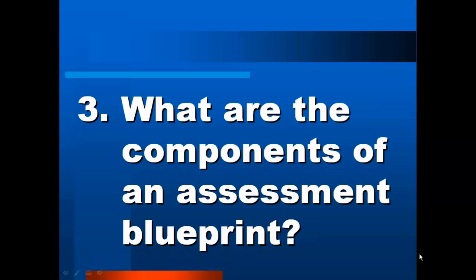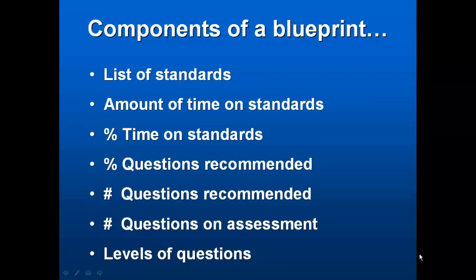What are the components of a typical assessment blueprint? Although there are many different kinds and formats, a typical blueprint includes six components. First, a list of standards or units or topics that comprise the course. Next, the amount of time spent in a course teaching each of the standards — for example, the number of hours or weeks. The next component is the percentage of time spent teaching each standard. For example, if you spend five weeks out of a 20-week course on a specific standard, then 25% of the course is spent on that standard.